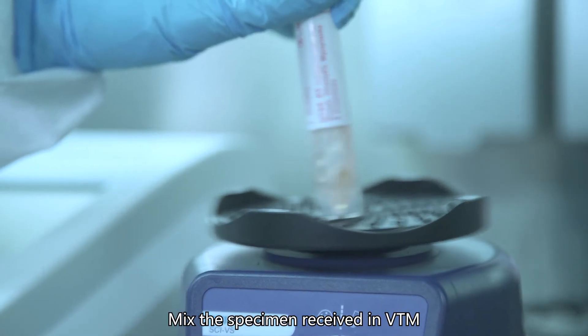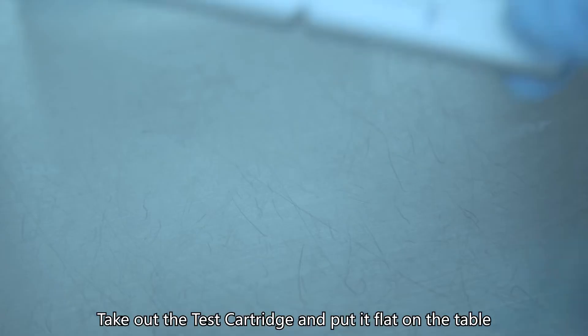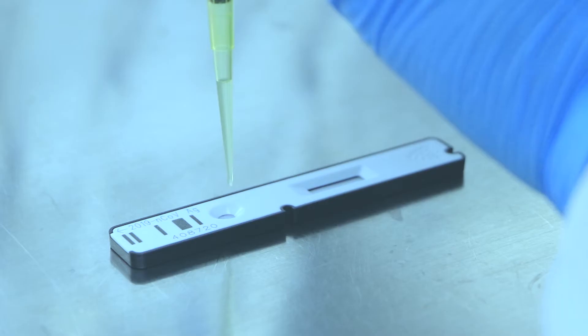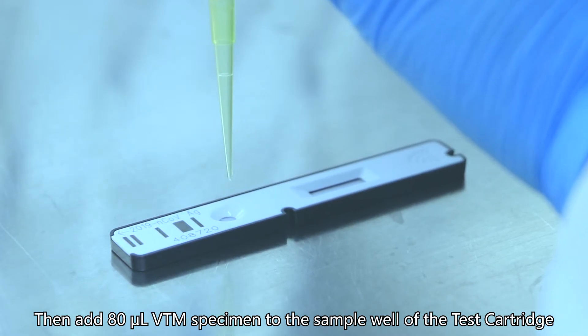Mix the specimen received in VTM by vortexing the tubes for 5 seconds. Take out the test cartridge and put it flat on the table, then add 80 microliters VTM specimen to the sample well of the test cartridge.